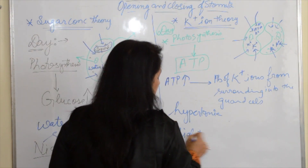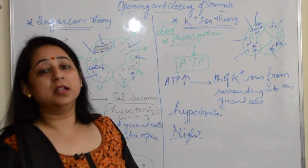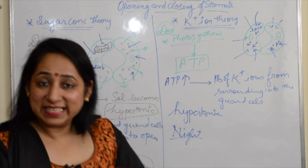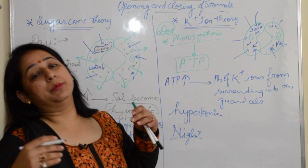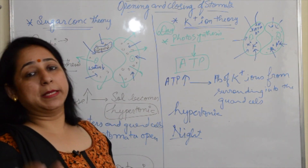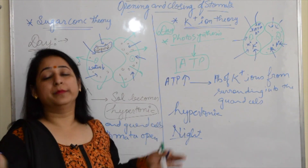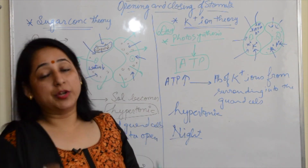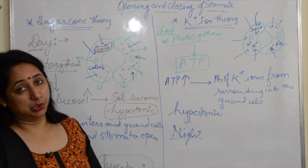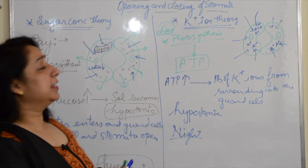During night, no photosynthesis means no ATP formation. When there is no ATP, potassium ion concentration decreases. When potassium ion concentration decreases, the solution inside the guard cells becomes hypotonic and water starts moving out, leading to shrinkage of the guard cells and the stomata close.